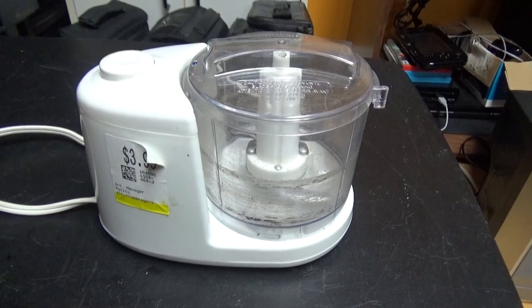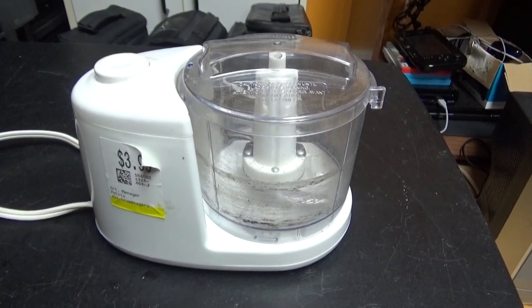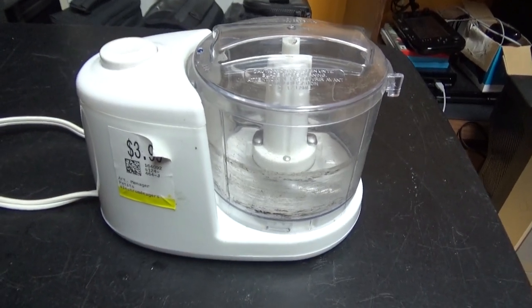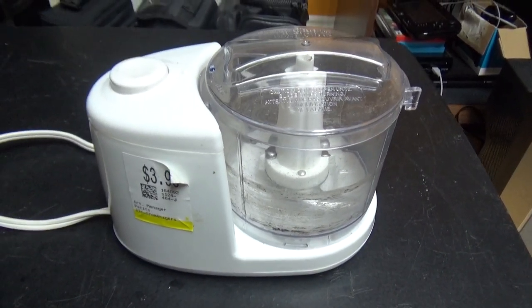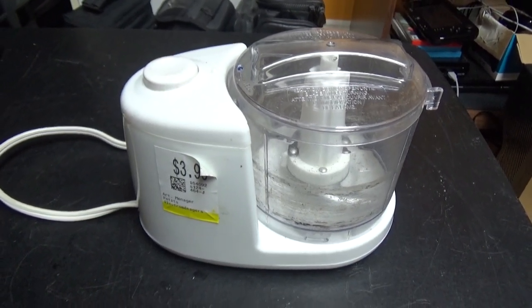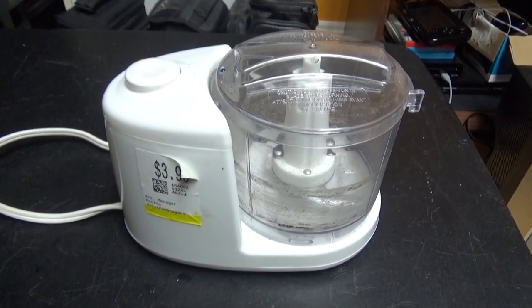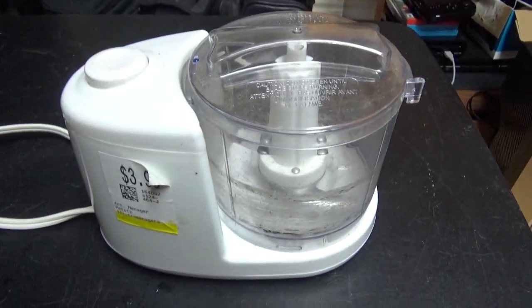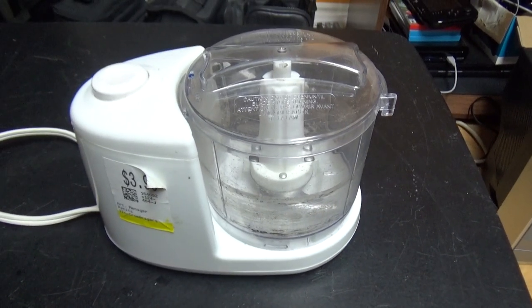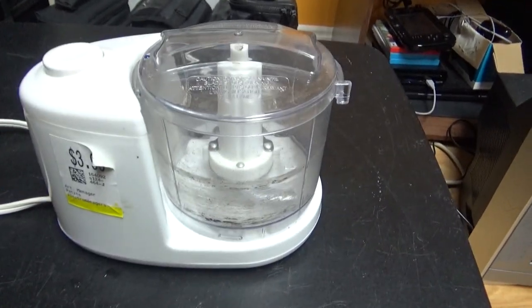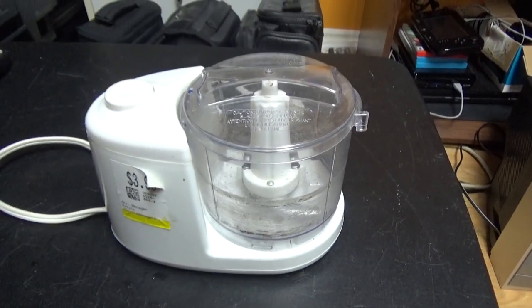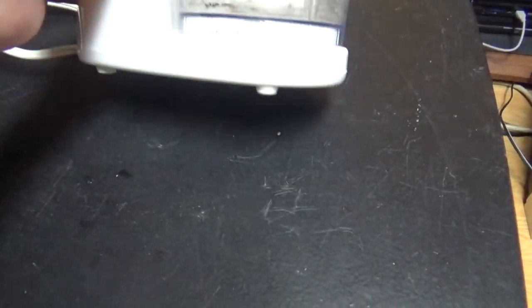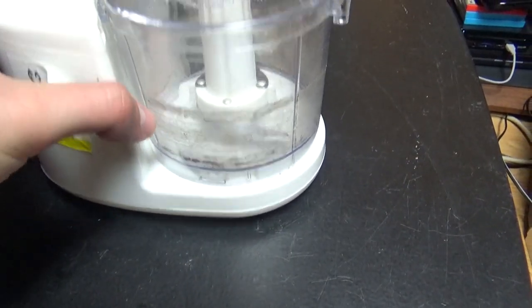And so I can do some experiments like putting some small objects in this and see if they're going to blend. Like you know these Will It Blend videos that we have all seen. They were in the early days of YouTube. That guy who puts everything in a blender like the very first iPhone that he put in the blender back when it just came out. But this is just a cheap mini blender and so I thought I will put some small objects in it.